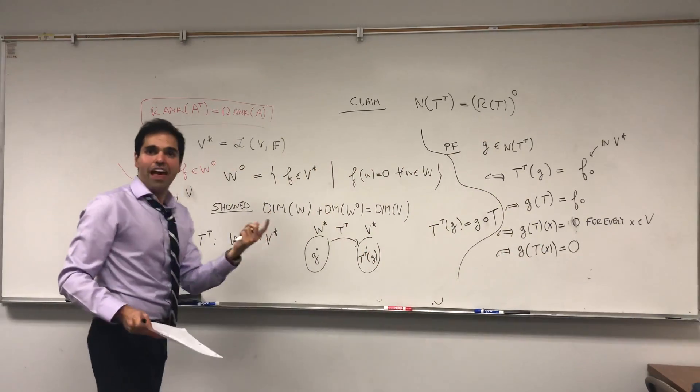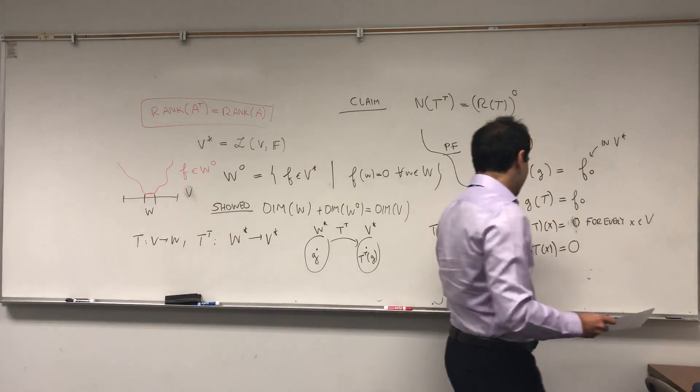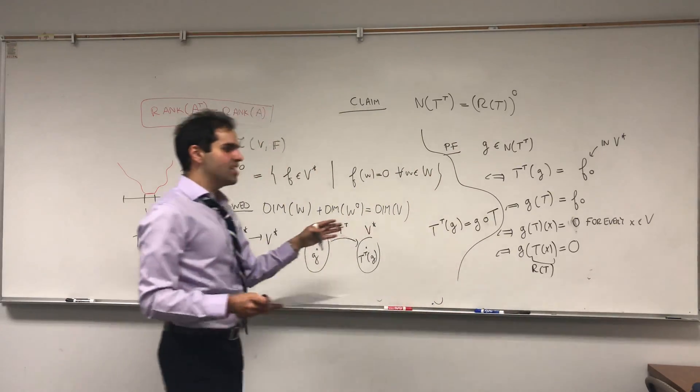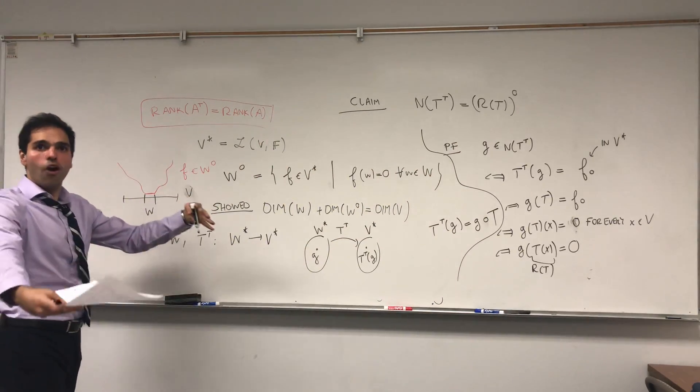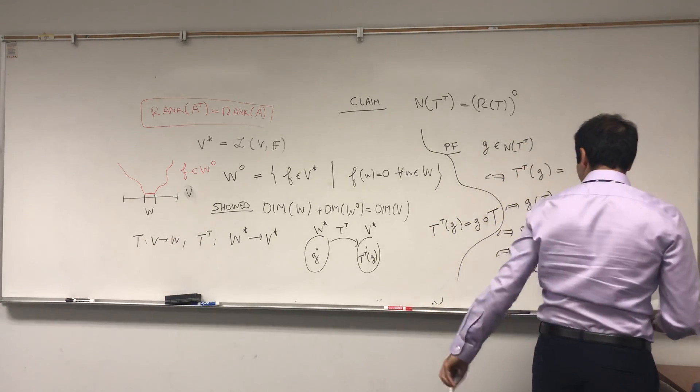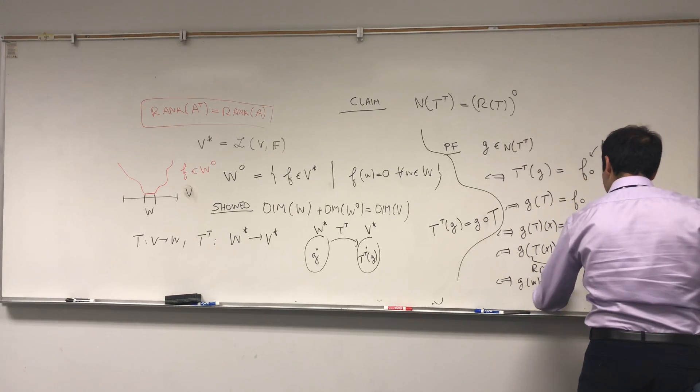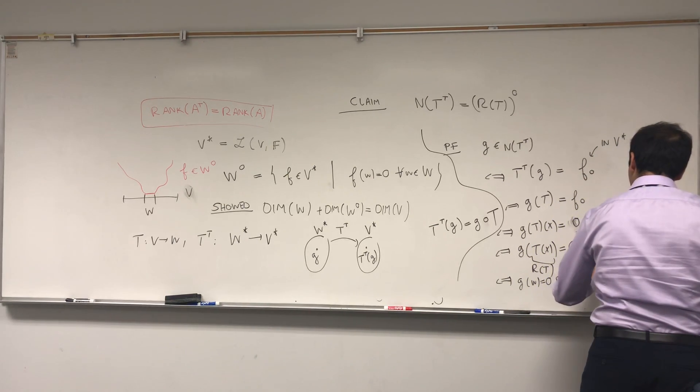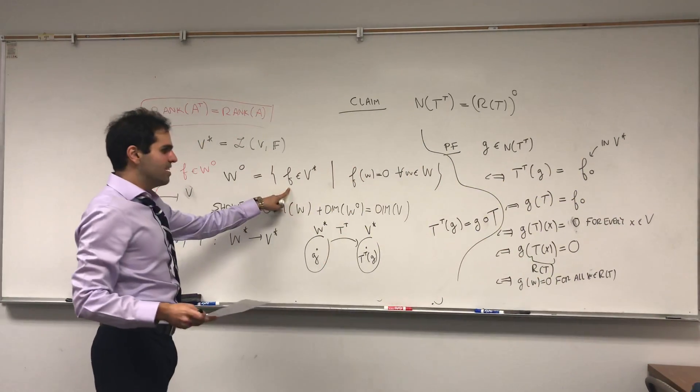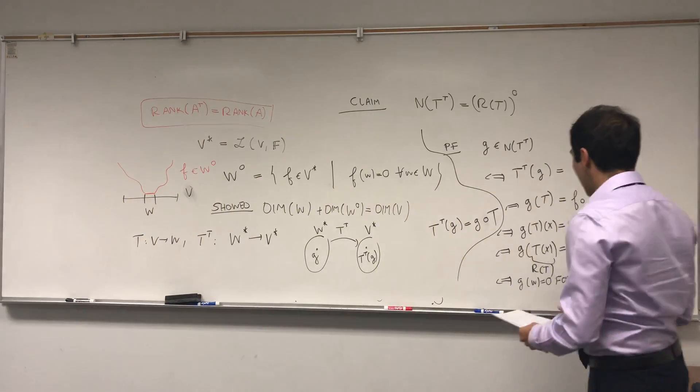Which is the same thing as saying that G of T of X equals zero. But look, T of X is just an arbitrary vector in R of T. So what this says is that G takes all of R of T and maps it to zero. Or if you want, G of W equals zero for all W in R of T. But by definition, this just means that G is in the annihilator of R of T.